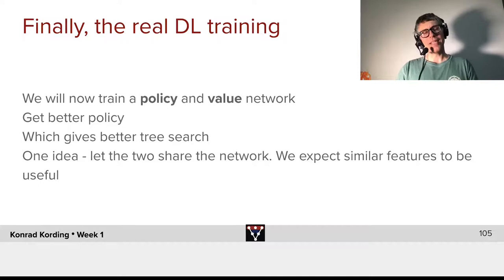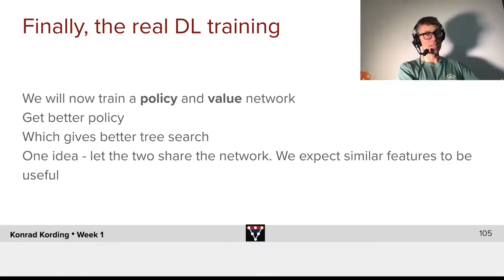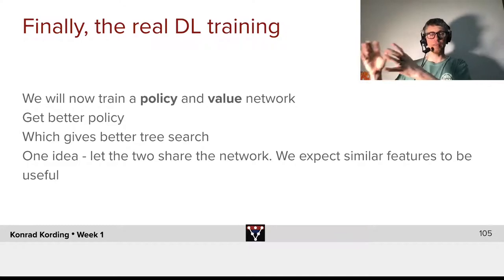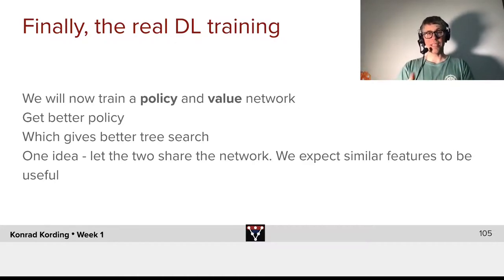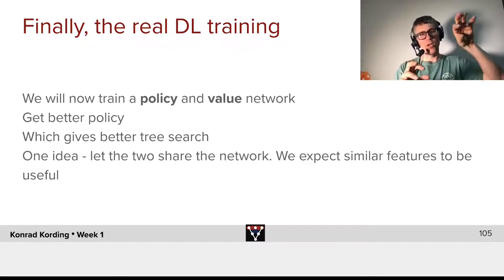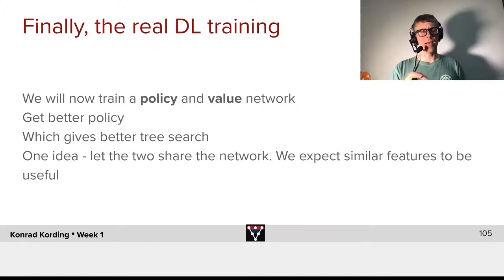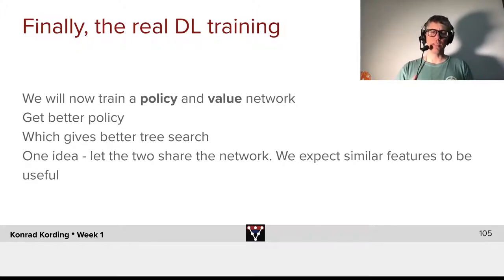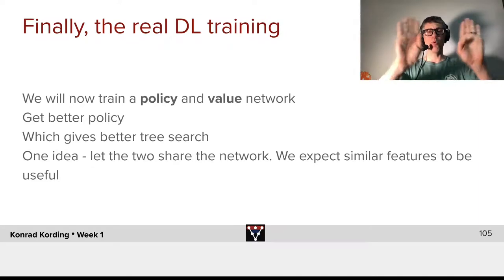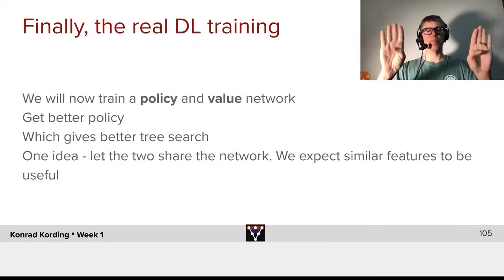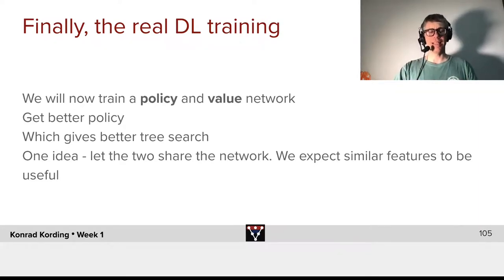One idea that is quite interesting: we could, in principle, have a function that deals with policy and a different function that deals with value. However, it makes a lot of sense to share the two of them. Why? Well, the features that help us know how good or bad we are might be similar features to the ones which say which moves we should choose. So, what we will have is one network that will give us policy and value at the same time.